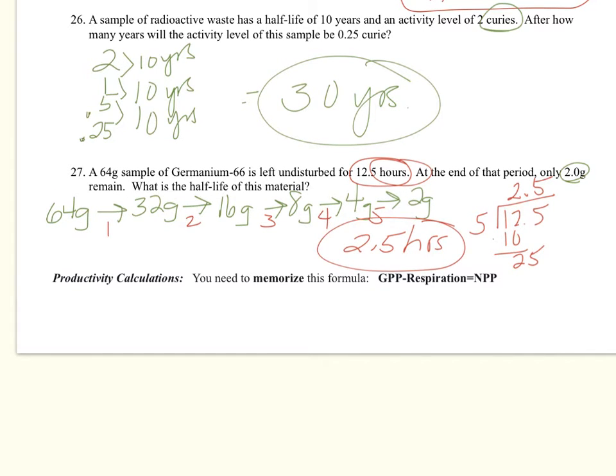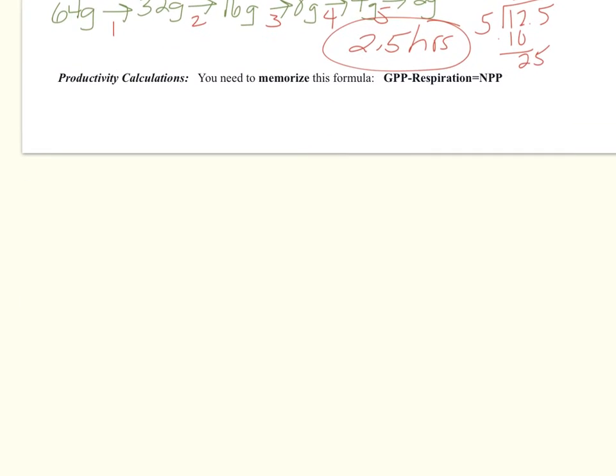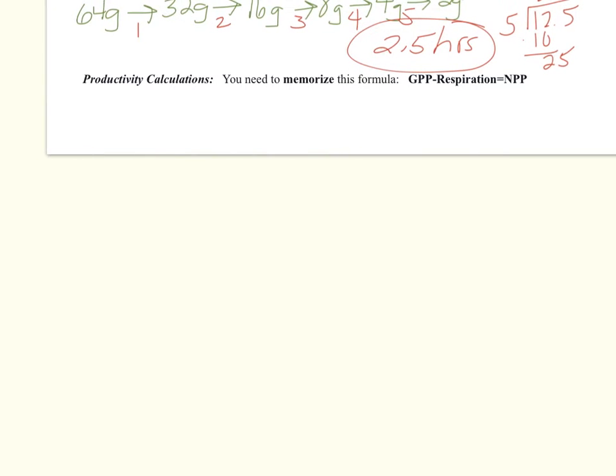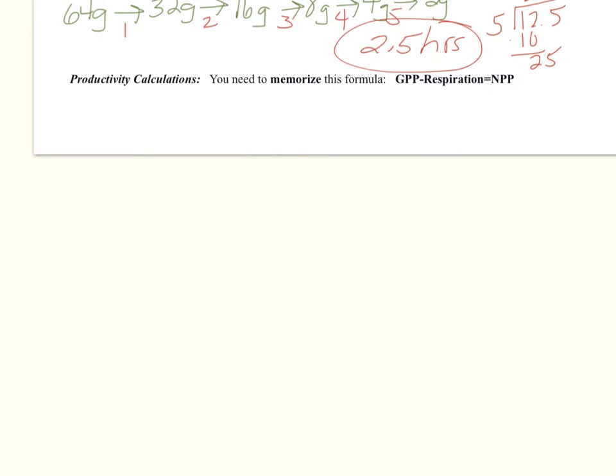So the next problem, number 28, has productivity calculations. You should know this. Gross primary production minus respiration is equal to net primary production. So going to number 28.